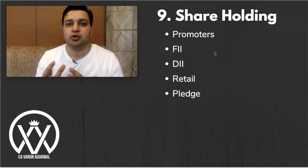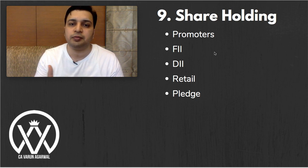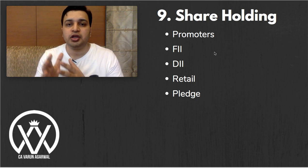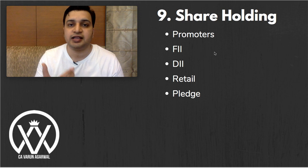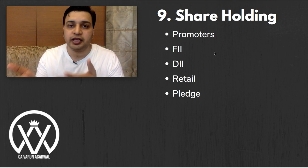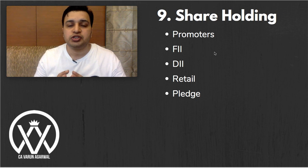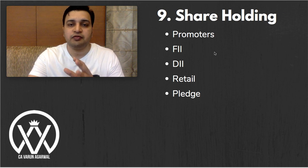The ninth factor to examine is shareholding pattern. Check whether promoters hold a substantial stake — ideally 40 to 50 percent, with good companies often holding 70 to 75 percent. Promoter holding should not be declining consistently. Also look at foreign institutional investor (FII) and domestic institutional investor (DII) holdings, as high FII presence signals quality. Finally, check whether promoters have pledged their shares as collateral for borrowings, which is a danger sign.